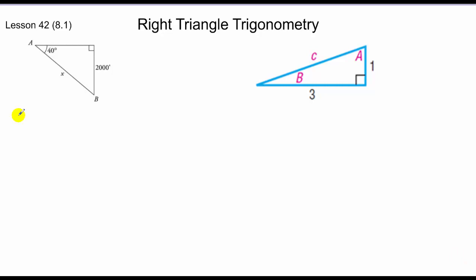Let's look at this first example here. We want to find the value of x, and we're given relative to this angle an opposite side and we need to find the hypotenuse. So the opposite and the hypotenuse, that's sine of 40 degrees, is equal to the opposite side, 2,000, over the hypotenuse, which is the unknown.